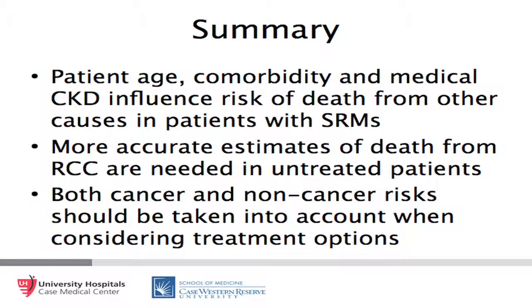In summary, patient age, comorbidity, and medical CKD appear to influence the risk of death from other causes in patients with small renal masses. What is needed is a more accurate estimate of death from kidney cancer in untreated patients, since most data present survival in treated patients. Both cancer and non-cancer risks should be taken into account when considering treatment options in patients with localized kidney cancer.